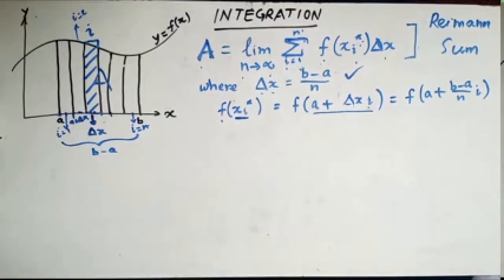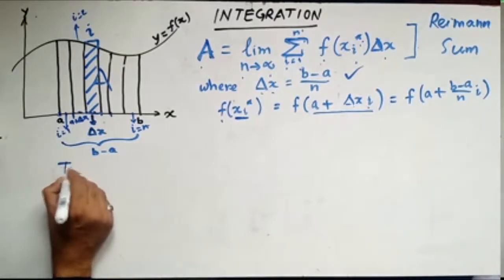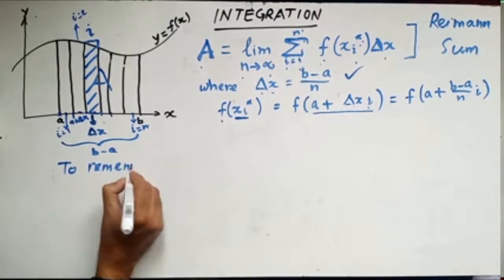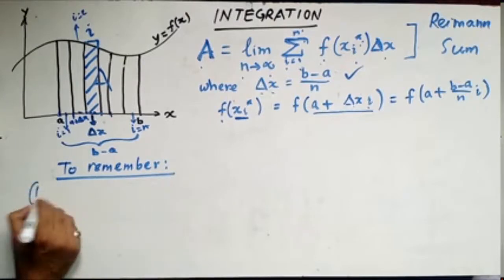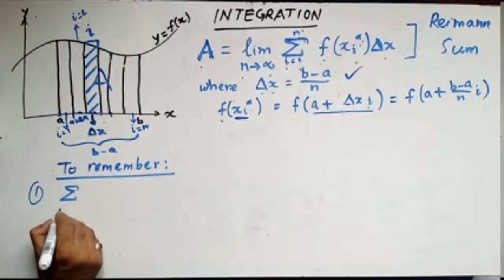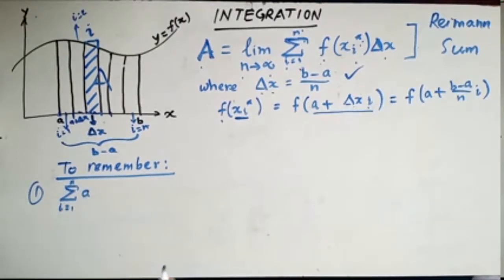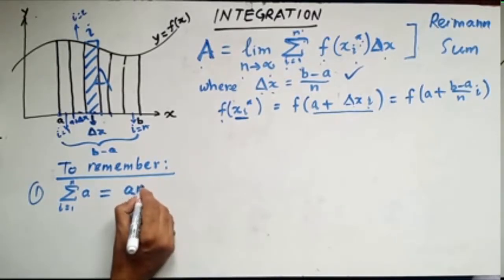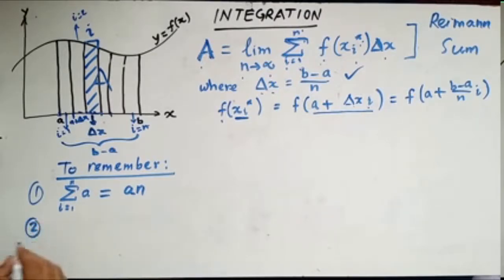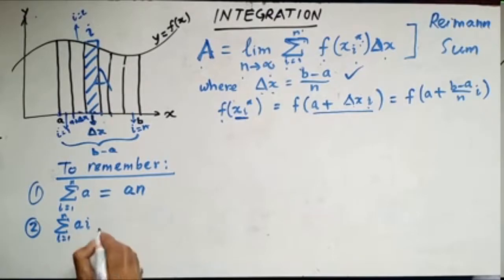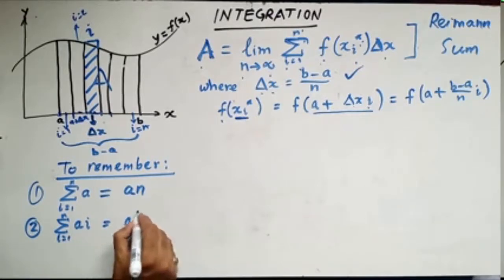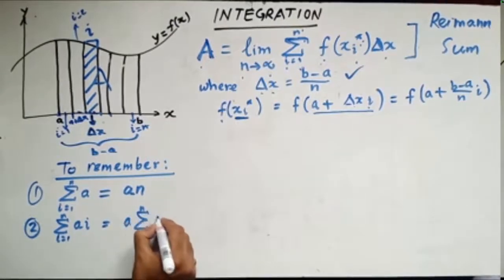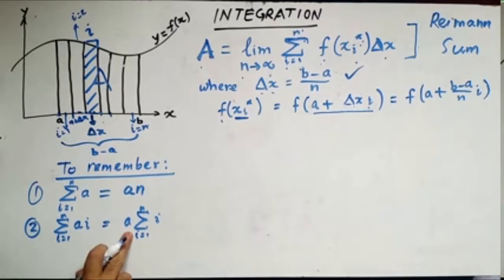We will take some examples on how to find the area using the Riemann sum. First, we need to remember a few rules. Rule 1: the summation from i equals 1 to n of a constant a equals a times n. Rule 2: the summation from i equals 1 to n of a times i equals a times the summation from i equals 1 to n of i, because a is a constant and comes out of the summation sign.